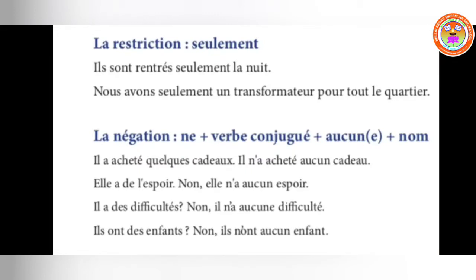Aucun accepts only gender agreement, not number. It doesn't vary with singular or plural — only gender matters. Aucun never agrees in number because it describes an absence of things — when you use ne...aucun it means nothing, so no number is required. They are always singular. You can use ne...aucun just as you use ne...pas to negate a sentence.